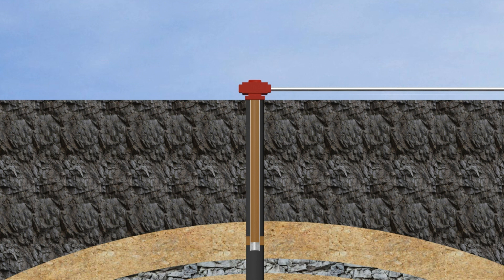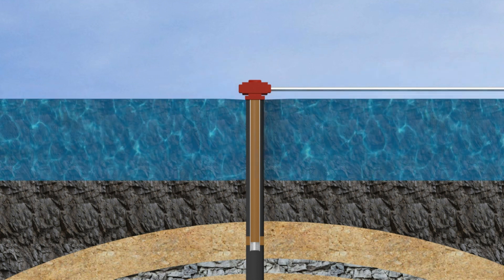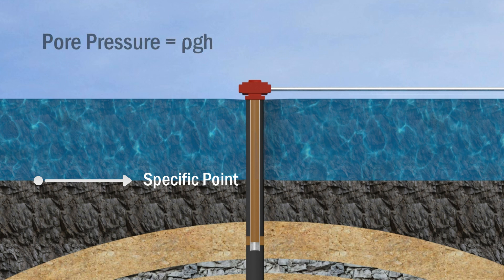Pore pressure is the pressure caused by the column of formation fluid above a specific point at which measurements are taken. Due to porosity and permeability, different subsurface layers at different depths are connected through rock pores, which is why pore pressure is measured from the surface to the desired point. Pore pressure equals ρgh, where ρ is the density of the formation fluid and h is the depth. To obtain the pore pressure gradient, pore pressure is divided by depth.